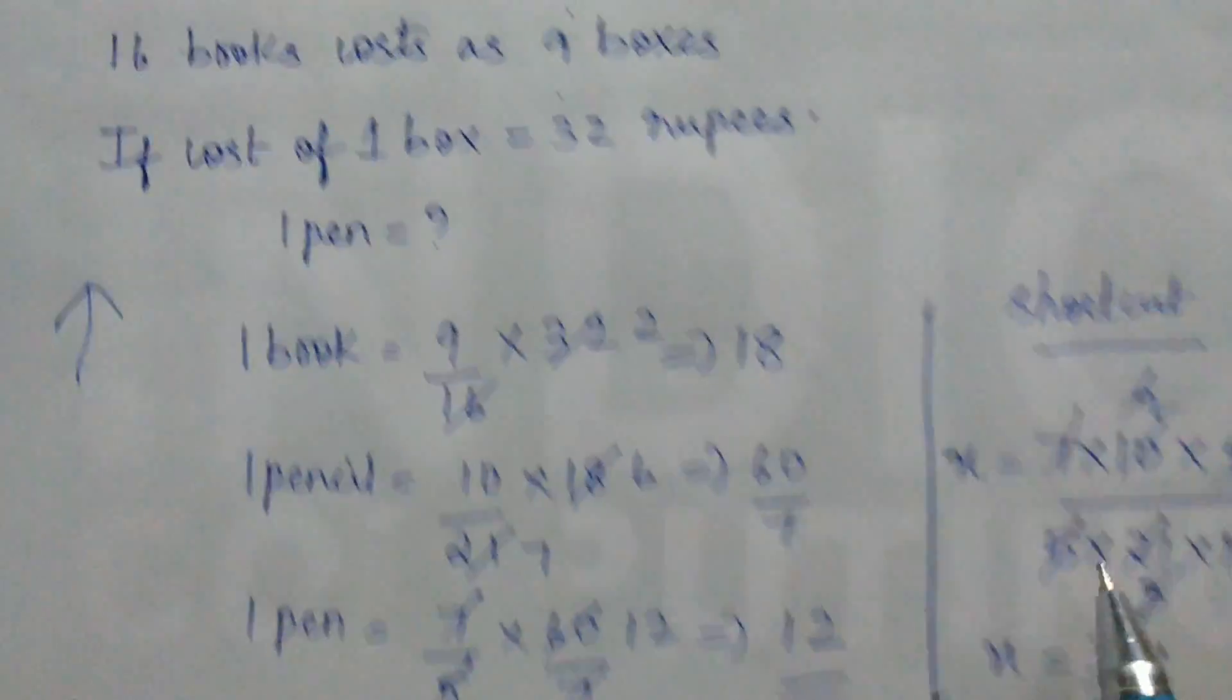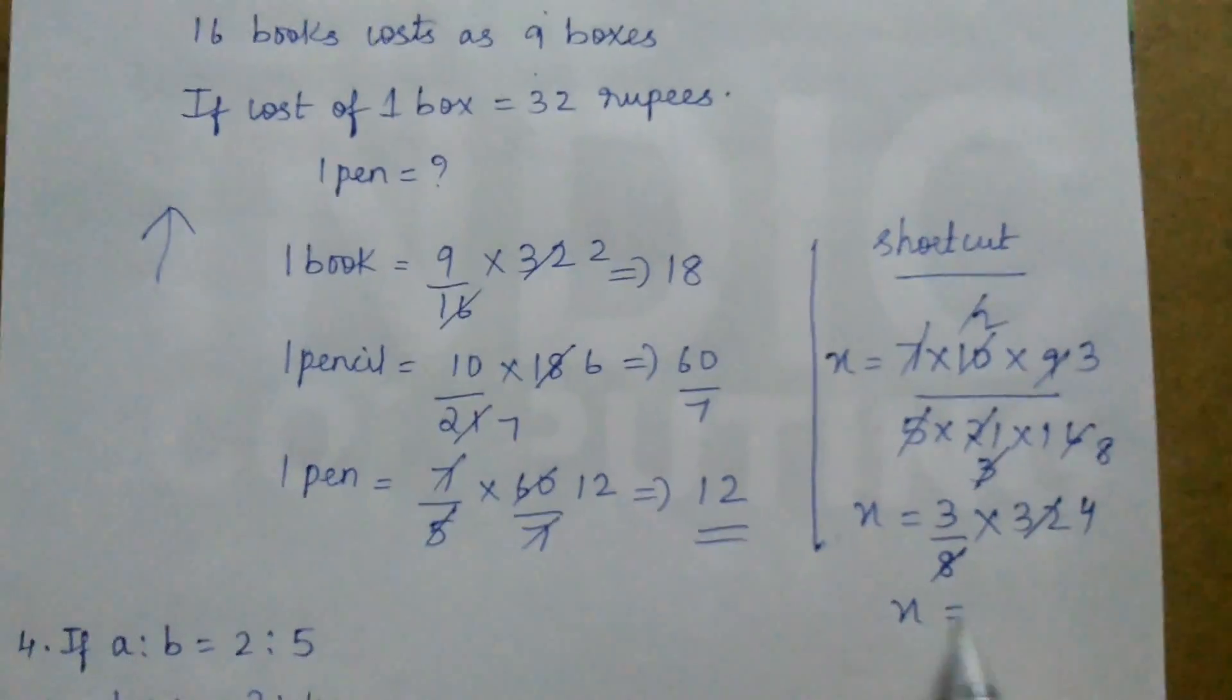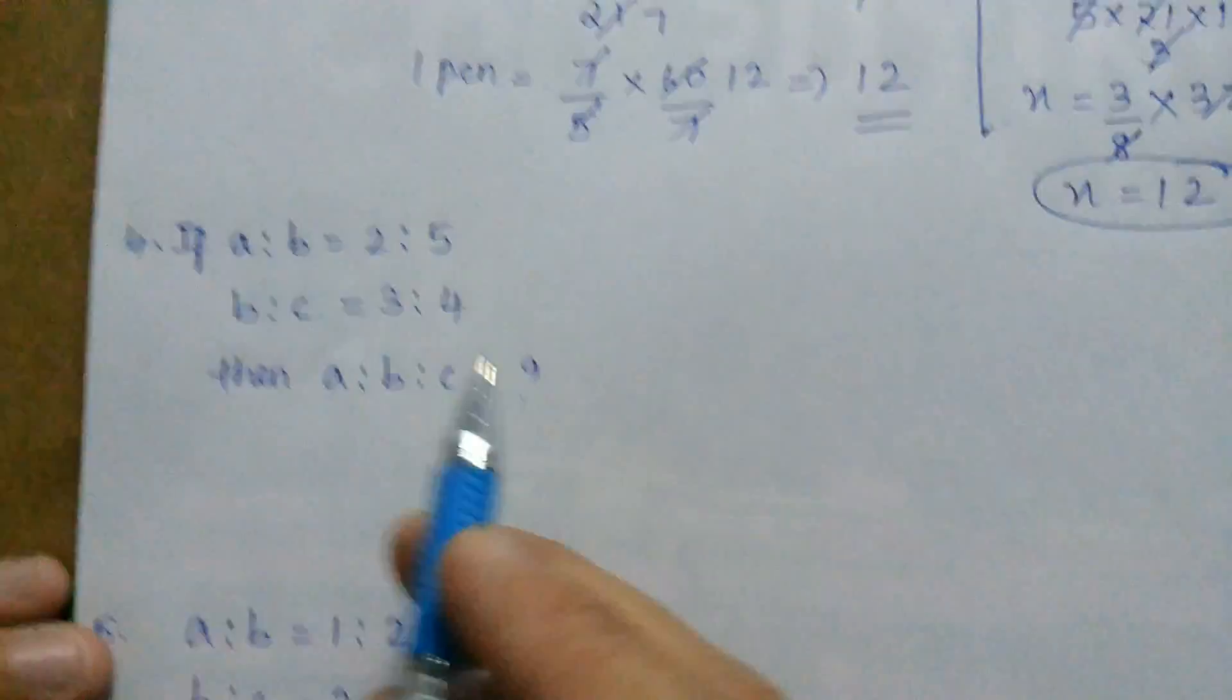The cost of 1 box is 32 rupees. So 3 by 8 times of 32 is 8 4s are. Again we get x is equal to 12. That is the cost of pen. Now let us see the problem on ratio.